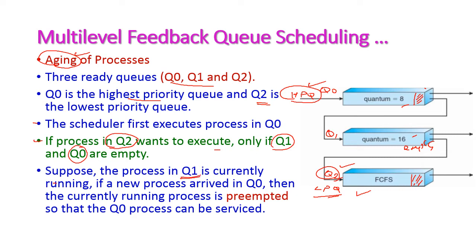Suppose process Q1 is currently running in the CPU, and a new process arrives in Q0. What happens immediately is that the currently running process from Q1 gets preempted, and the process from Q0 gets executed in the CPU. That is, the currently running process from Q1 is preempted so that the process from Q0 will be serviced.